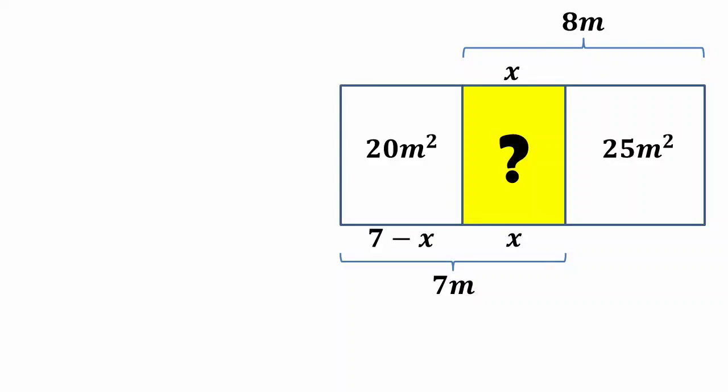The third rectangle will be 8 minus X. Similarly, the length of all these rectangles is Y. So the area of the first rectangle will be 7 minus X times Y equals 20.